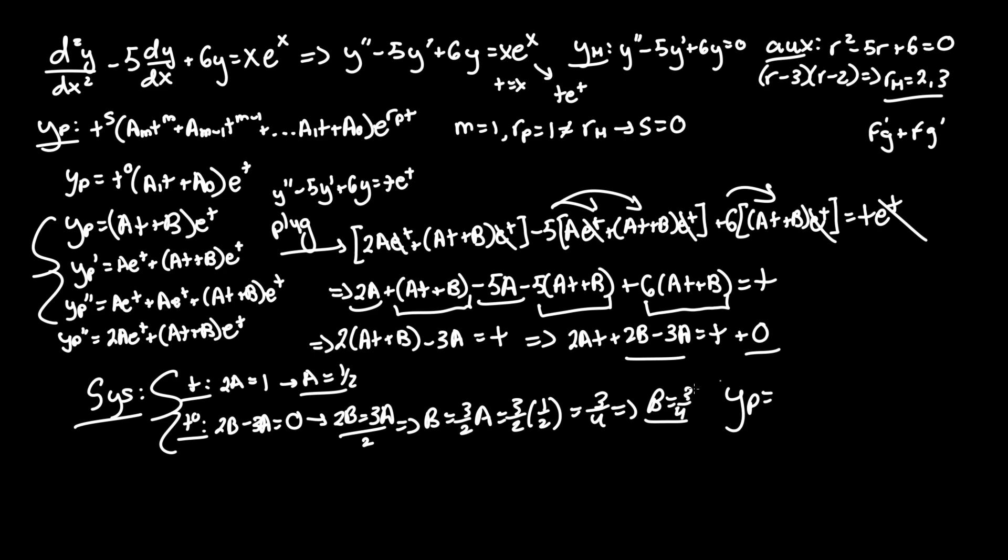And we have our particular solution all set. Looking back here, where we have our a and b term for y particular, all we have to do is plug in a and b. at plus b becomes 1 half t, or just t over 2, plus 3 fourths, times e to the t. And that's it. That's our solution. The problem doesn't ask for anything else. It just wants the particular solution. But if you were to find everything, it would be y general equals y homogeneous plus y particular. So find the homogeneous solution from the homogeneous roots 2 and 3, and after that just add this whole term and you have your general solution.